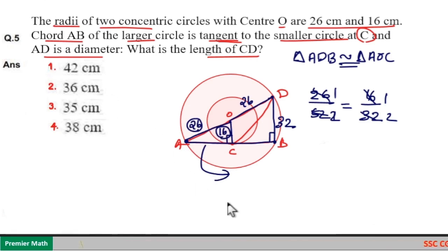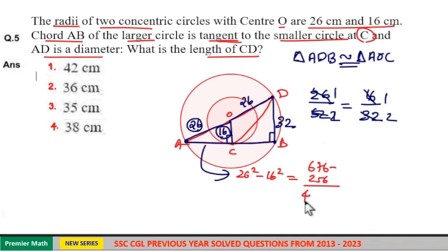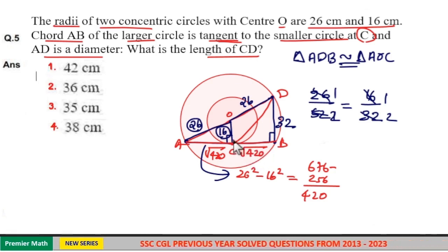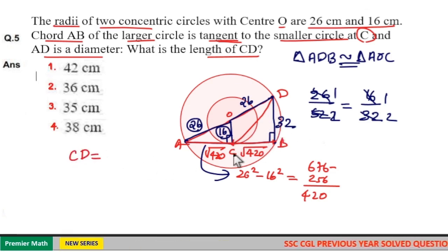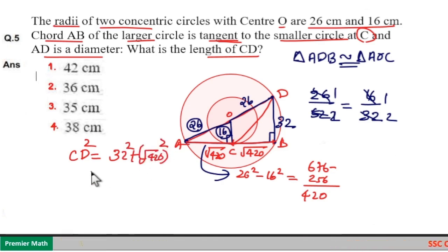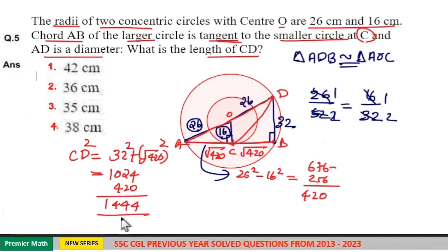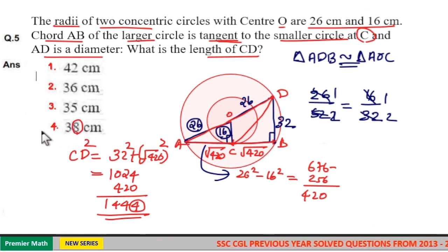With radius 26 and OC = 16, this side equals root of 26 squared minus 16 squared, which is root of 676 minus 256, equal to root 420. Similarly, AC equals CB equals root 420. Then CD squared equals 32 squared plus root 420 squared, which is 1024 plus 420, equal to 1444. The unit digit is 4 — if you square 38, you get unit digit 4. So option 4 is your answer.